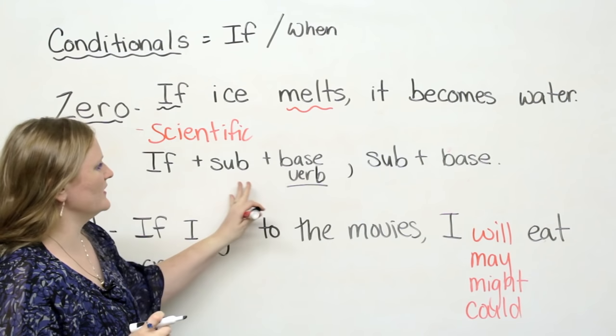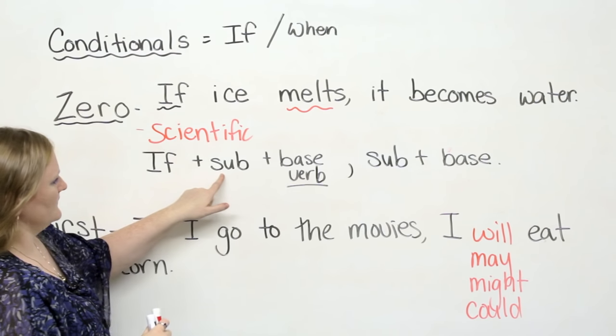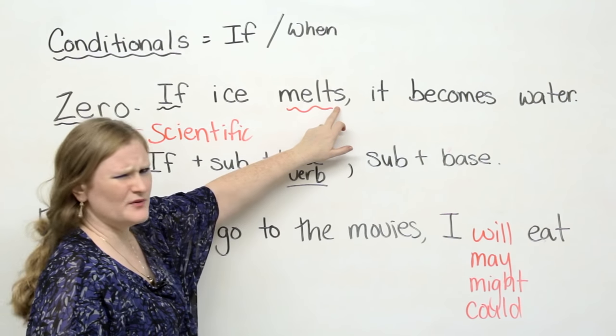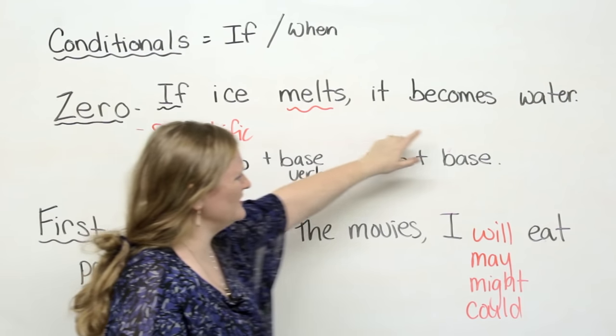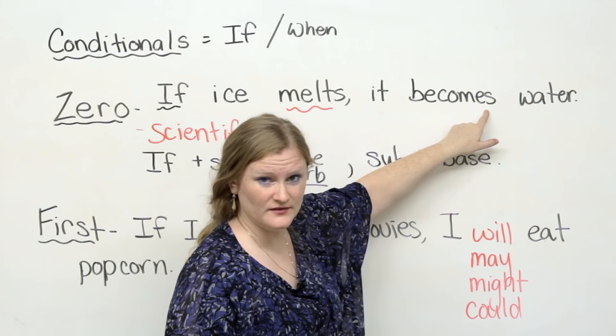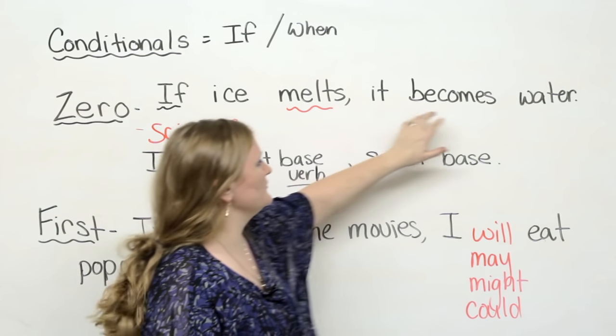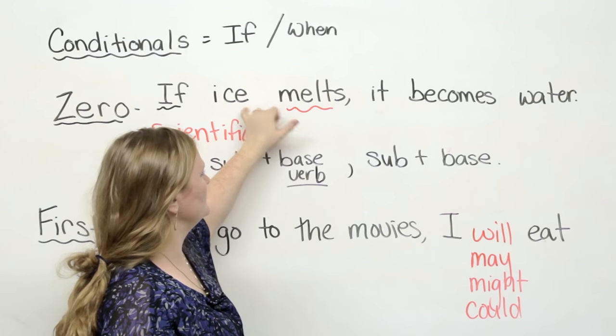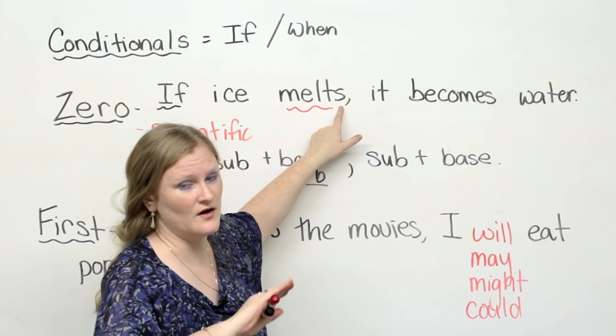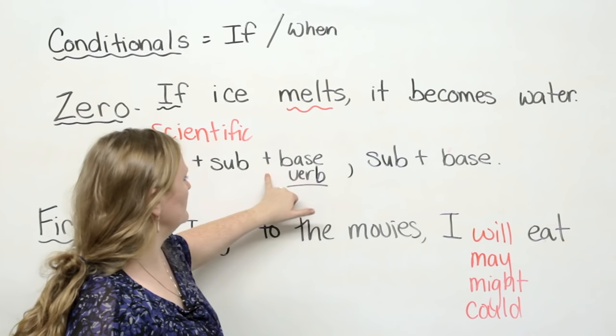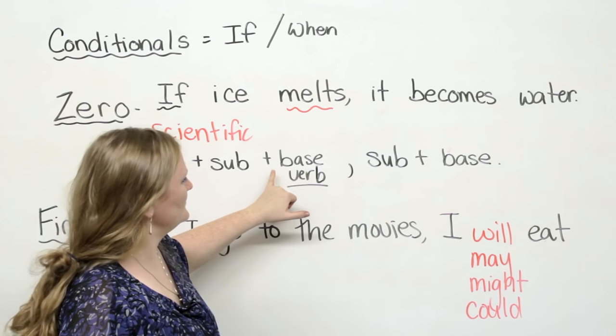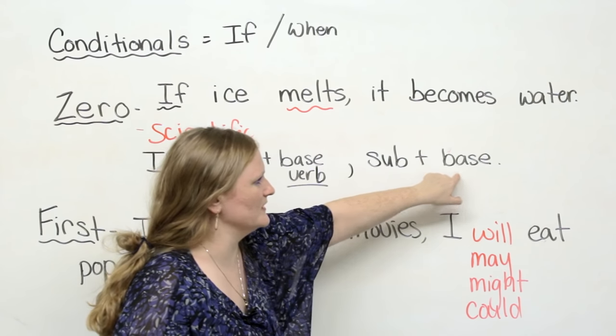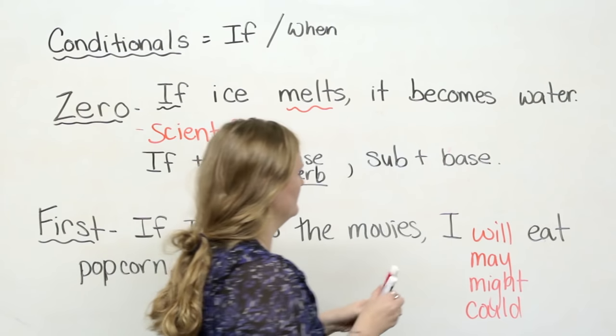So if we look at this I have if, my subject is ice and I have melts. Oh why did I put an s on melts? And why did I put an s on becomes? Does anyone know the answer? The answer is because this is singular - it and ice is singular. If your subject is singular you need to put an s on the verb 100% of the time. So if ice melts, I have a comma, it is my subject, becomes base verb again, water. Base verb.